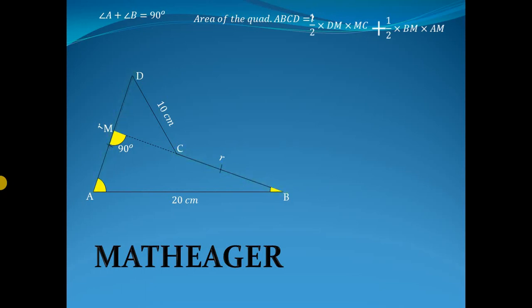Suppose the magnitude of MD is a, then AM will be r minus a. And suppose the magnitude of MC is b. Now substitute these values.